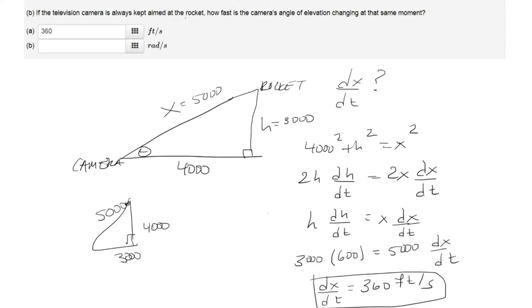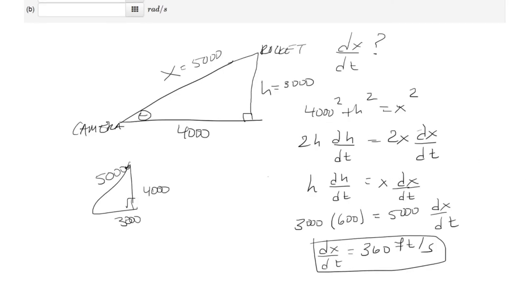For part b, we want to see how fast the camera's angle of elevation is changing at that moment. So we want a formula in terms of theta. For that we're going to use tangent. We know that tangent theta is opposite over adjacent, so tangent theta is opposite h over adjacent which is 4,000.